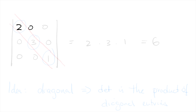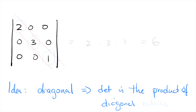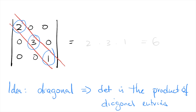Say we've got the matrix with entries 2, 0, 0, 0, 3, 0, 0, 0, 1, and we need to find the determinant. The idea is: if you're trying to find the determinant of a diagonal matrix, the determinant is the product of the diagonal entries. This matrix is diagonal because all of the non-zero entries are in the i,i position along the main diagonal. So the determinant is 2 × 3 × 1, which is 6.